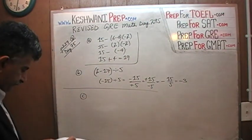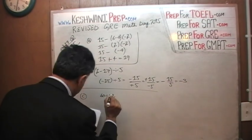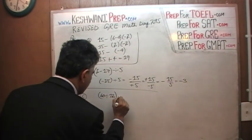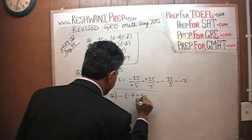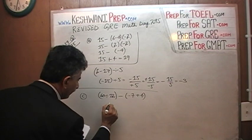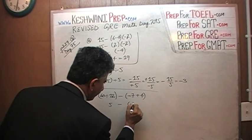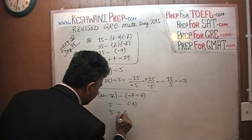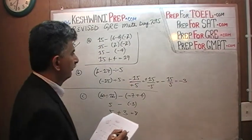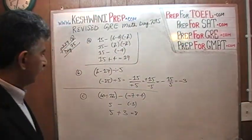Part C. 60 divided by 12 we are told minus (negative 7 plus 4). 60 divided by 12 is 5. Minus negative 7 and positive 4 is going to give us negative 3. And a negative 3 and outside is negative so it becomes 5 plus 3 which is 8.